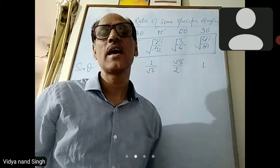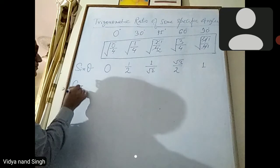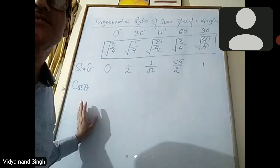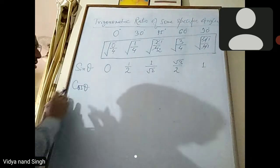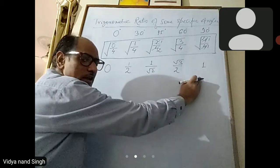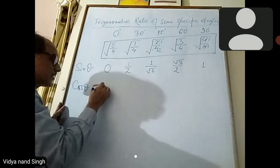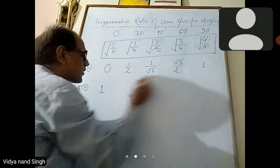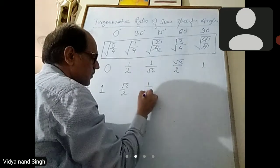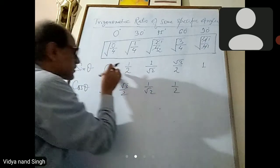यही याद रखना है। अब साइन के बाद cos theta याद है — cos theta के लिए साइन का जो वैल्यू लिखना है, उसका opposite लिखना है। तो 3 by 2 को second में, 3 में same हो जाएगा, 4 में 1 by 2, और 5 में 0।